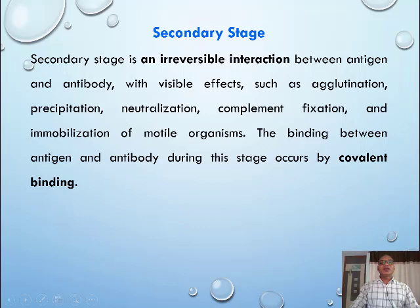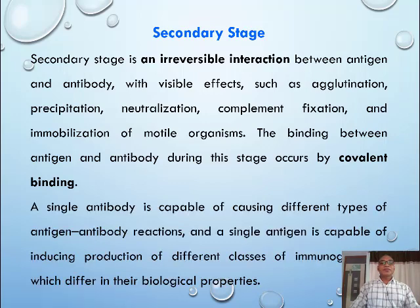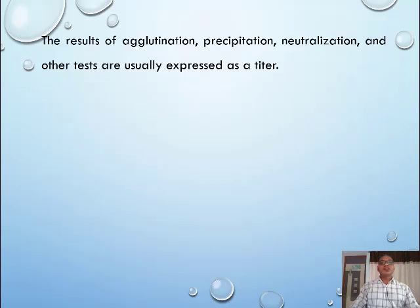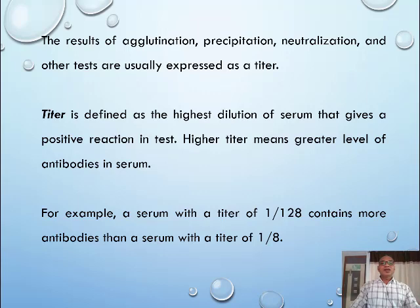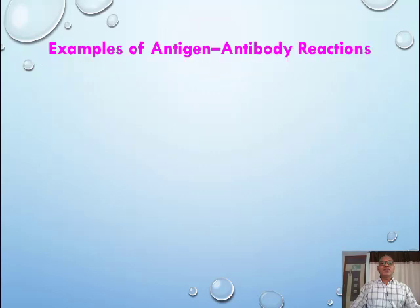The binding between antigen and antibody during the secondary stage occurs by covalent binding. A single antibody is capable of causing different types of antigen-antibody reactions, and a single antigen is capable of inducing production of different classes of immunoglobulins which differ in their biological properties. The results of agglutination, precipitation, neutralization, and other tests are usually expressed as a titer — defined as the highest dilution of serum that gives a positive reaction in the test. A higher titer means a greater level of antibodies in the serum. For example, a serum with a titer of 1/128 contains more antibodies than a serum with a titer of 1/8.